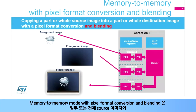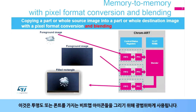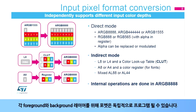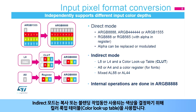Memory to memory mode with pixel format conversion and blending is used to blend a part or whole source image with a part or whole destination image with a different pixel format. This is widely used to draw bitmap icons having transparency or fonts. For each foreground and background layer, the format can be programmed independently. Direct mode fetches the RGB or ARGB content directly from the memory, while indirect mode uses an intermediate color lookup table to determine the color to be used during the copy or blending operation.